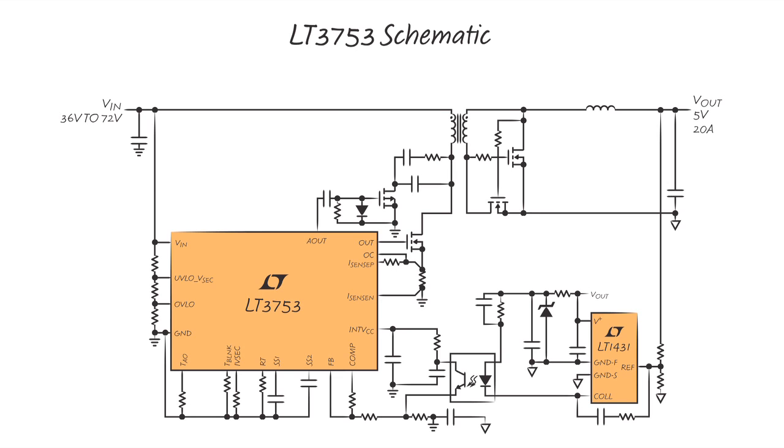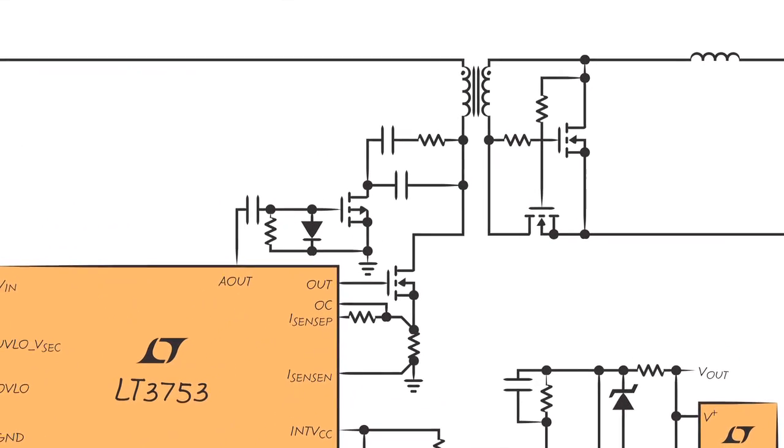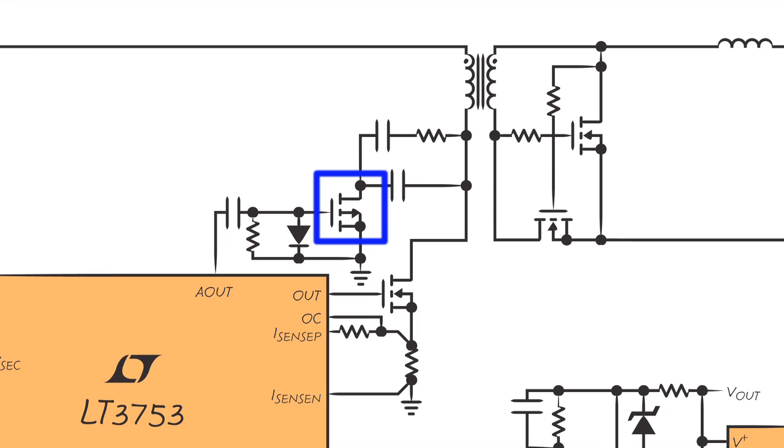The active reset circuit consists of a P-channel MOSFET and a reset cap. The voltage across the reset capacitor automatically adjusts with the duty cycle to provide complete transformer reset under all operating conditions.